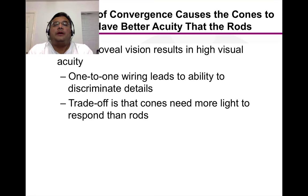Of course, the trade-off is that the cones need more light. They need more light because each one is communicating with one, taking up one entire ganglion cell. So a lot more information, a lot more light needs to be used by the cones in order to be able to pick up those details.